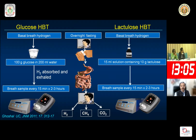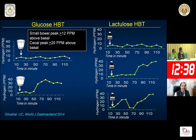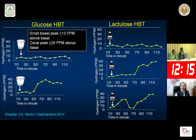Jejunal aspiration is a very invasive technique, so we want to replace it with something less invasive. Nowadays we use the glucose hydrogen breath test to diagnose bacterial overgrowth, in which the subject ingests 75 to 100 grams of glucose and we measure whether there is an increase in hydrogen production in the breath. On the left side you can see two graphs — one shows a flat line, which is a negative test, and the other shows a rise in breath hydrogen after glucose ingestion, which is a positive glucose hydrogen breath test.